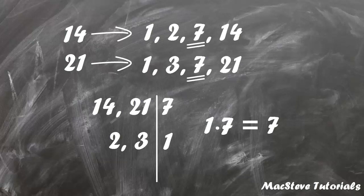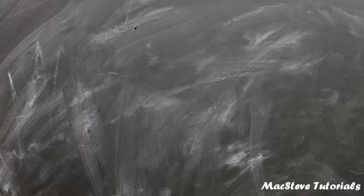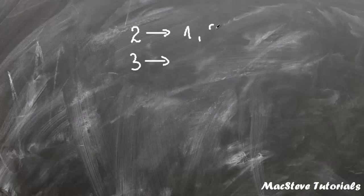It's up to you to choose the method you prefer and now we are going to practice finding greatest common factor by solving some problems. In the first example we will find greatest common factor for 2 and 3. We will make a list of all factors of 2, which are 1 and 2. The factors of 3 are 1 and 3. The only number that is common for 2 and 3 is 1, so 1 is the greatest common factor.